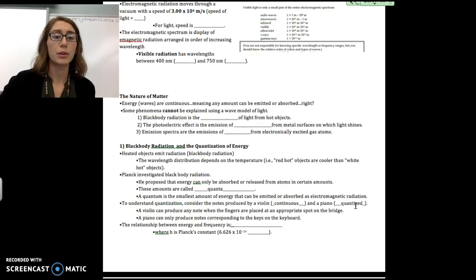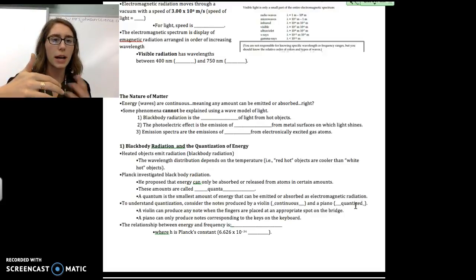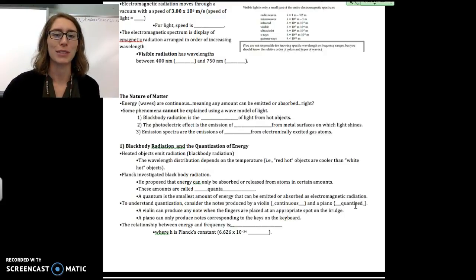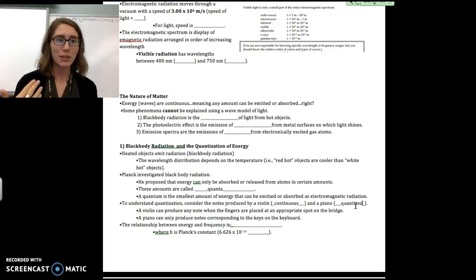Think about the notes that are produced by a violin in comparison with those produced by a piano. We could think of a violin as being continuous, and it's sort of an analogy for continuous energy. The piano is our analogy for quantized energy. A violin can produce any note. When you put your fingers on the bridge at the right spot and pluck the strings in the right way, you can get any sort of note to be produced from a violin. However, a piano, which I am more familiar with, when you hit the key, only one note is going to come out. We can't adjust the note just from the key.